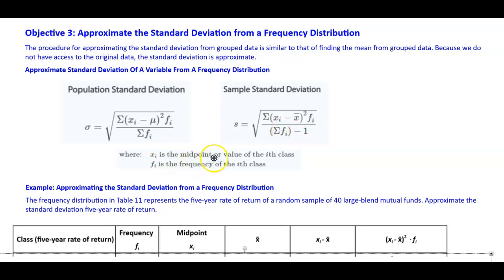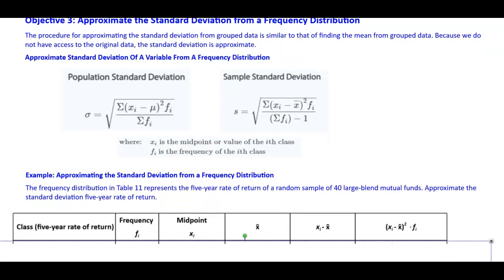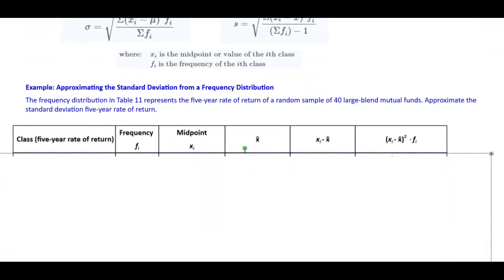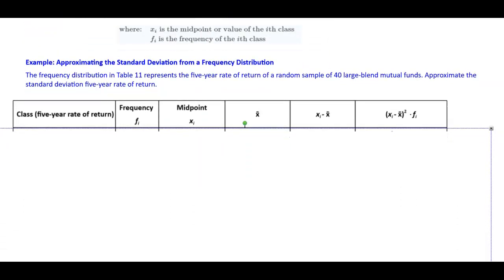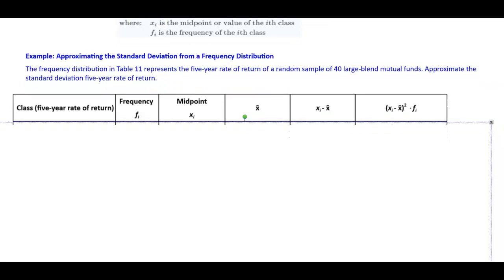Here, x subscript i is the midpoint or value of the i-th class, and f subscript i is the frequency for the i-th class. Now let's look at an example. We are approximating the standard deviation from a frequency distribution. The frequency distribution in the table below represents the five-year rate of return of a random sample of 40 large blend mutual funds. We want to approximate the standard deviation of the five-year rate of return.